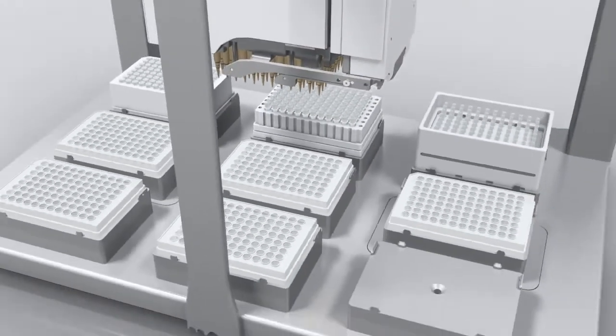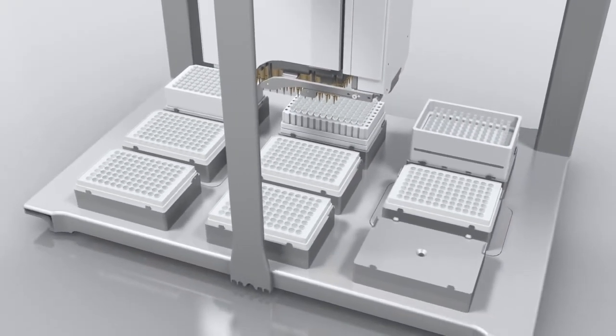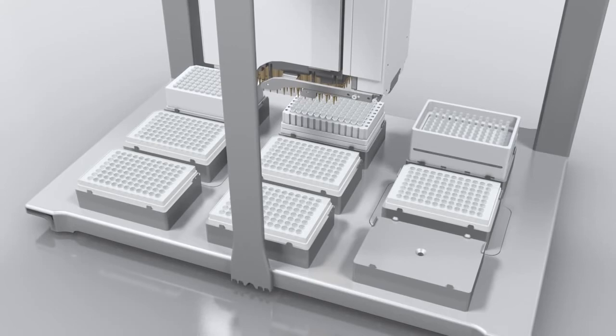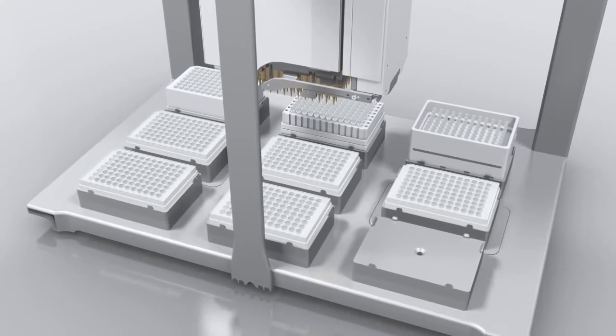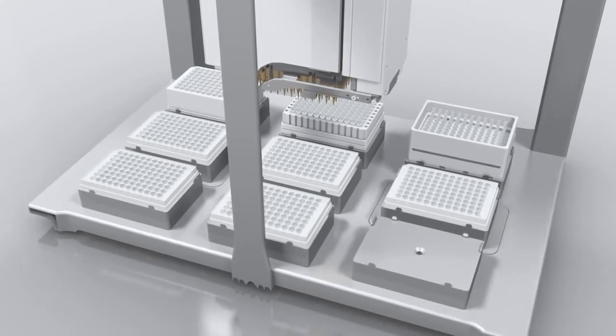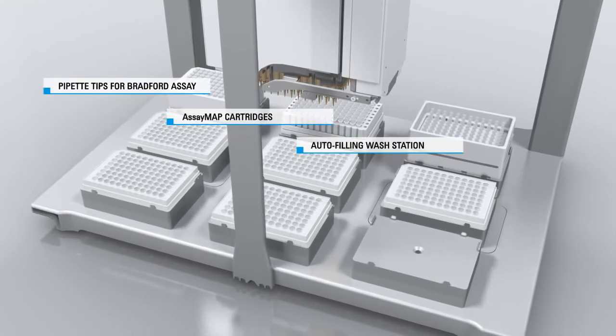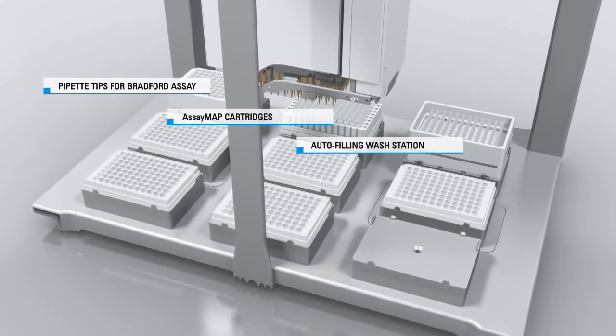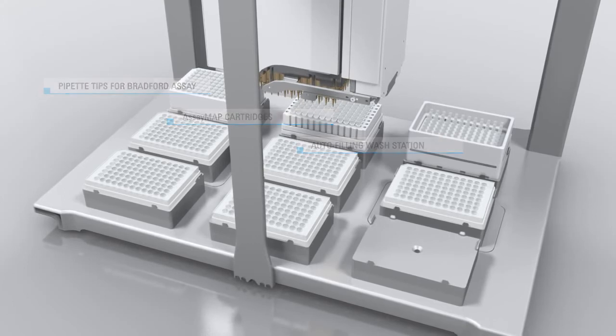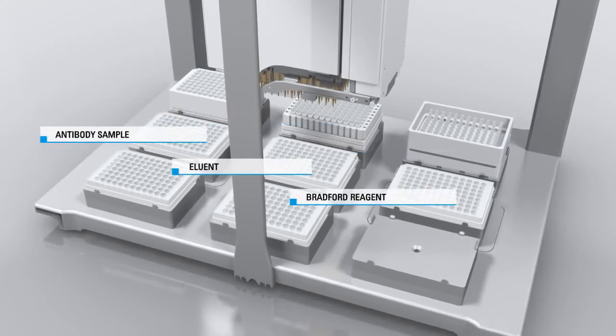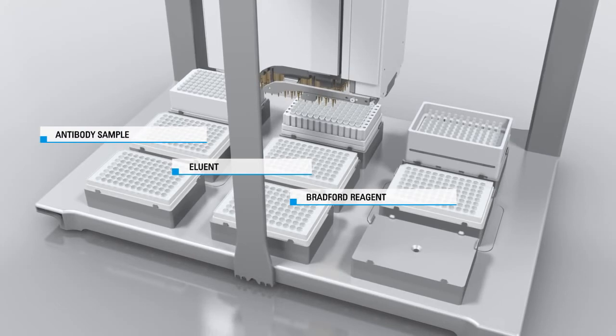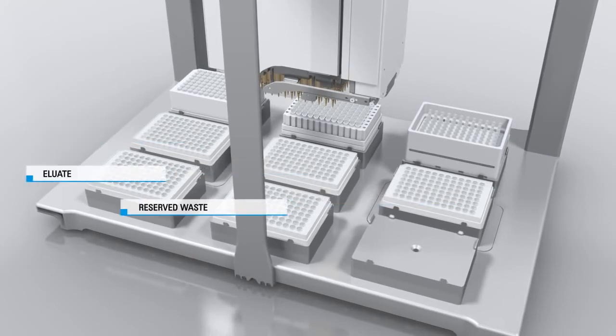In this example, you can see how the Bravo can be configured for a monoclonal antibody purification and titer assay using a protein A resin. The Bravo deck has positions for pipette tips for a Bradford assay, the AssayMap cartridges, an auto-filling wash station for cartridge wash steps, positions for the antibody sample, eluent and Bradford reagent, and empty collection plates for the eluent and wash flow-through waste in the front.